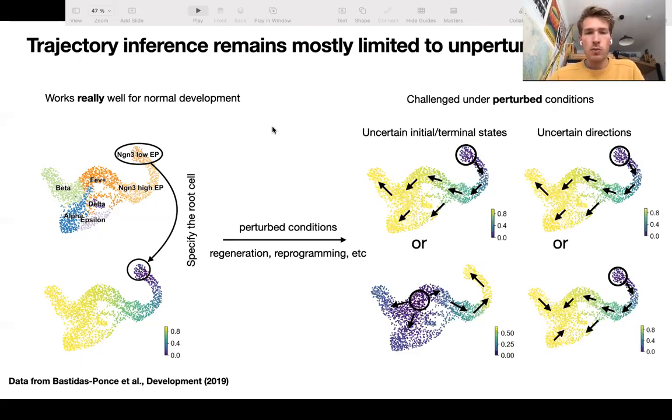However, if you think of perturbed conditions like regeneration, cancer, and so on, this is much more difficult because it is often unclear where the initial and the terminal states are, and the directionality itself is often also unclear.